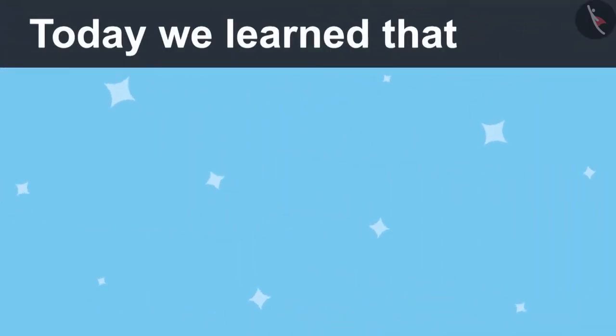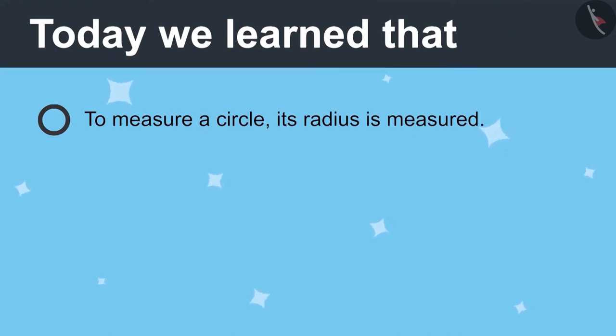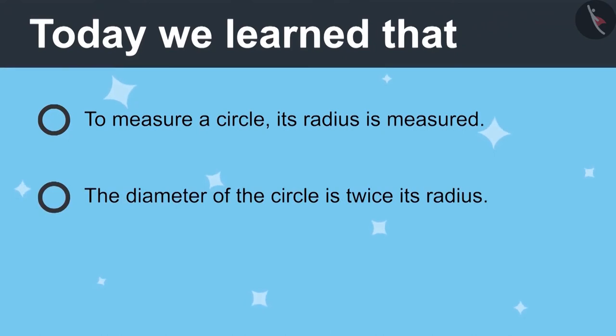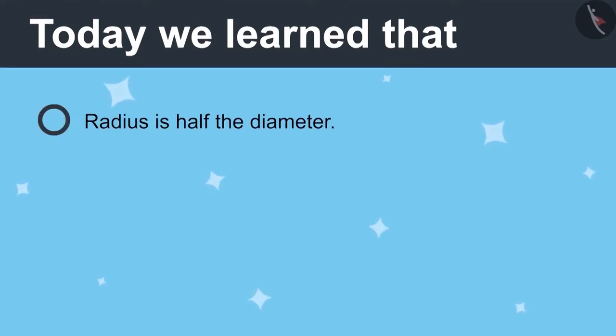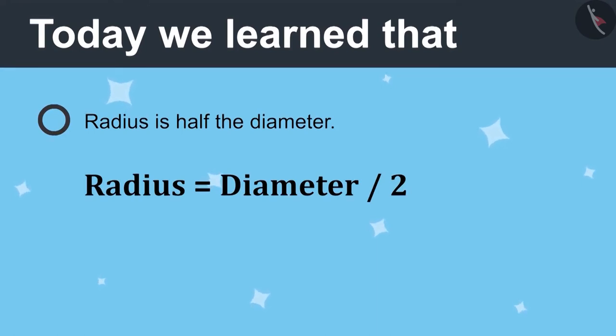Today we learned, to measure a circle, its radius is measured. The diameter of the circle is twice its radius. Diameter is equal to radius multiplied by 2. Radius is half the diameter. Radius is equal to diameter divided by 2.